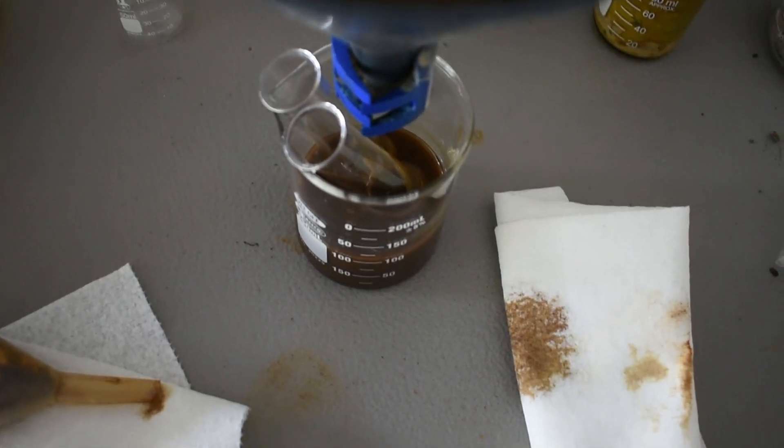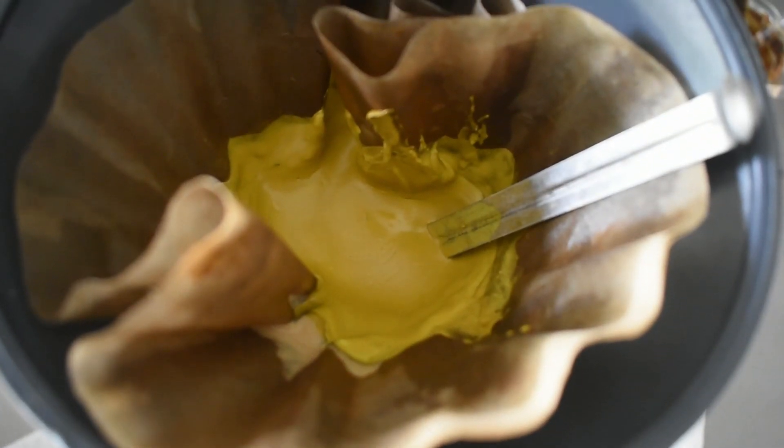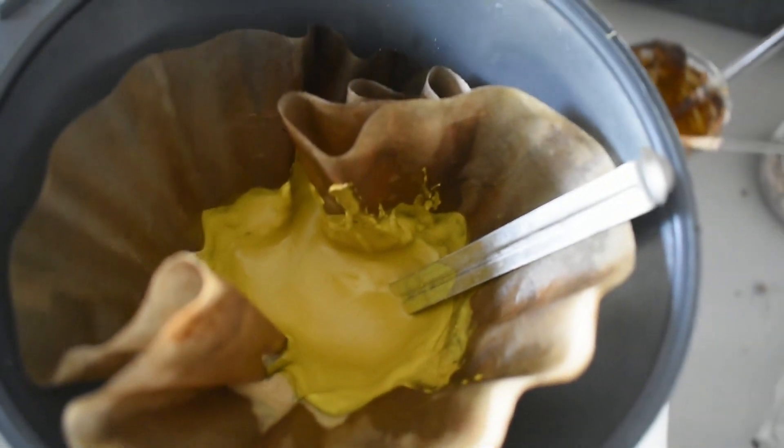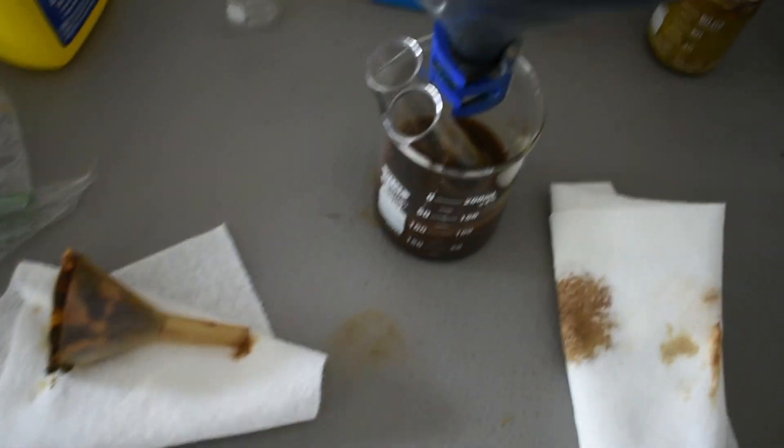So after washing with methanol and pyridine multiple times, I have finally gotten a product, which is quite yellow. It's not brown anymore. It looks pretty good. As you can see, I kind of made a mess in doing so. A lot of the oxidized stuff came down.